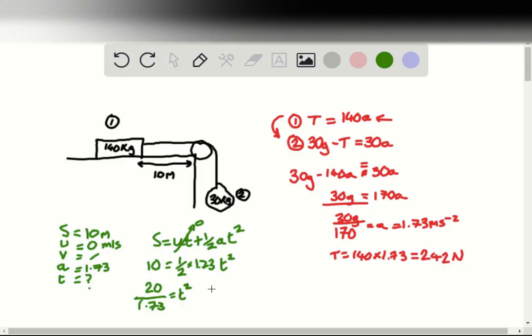Putting this into a calculator, that would mean that t is equal to the square root of 20 over 1.73. And in the calculator, we can very quickly determine that t is equal to 3.4 seconds. And that is question 31.